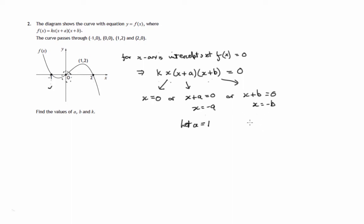And in this case, we'll let b be equal to negative 2, in which case here x would be negative of negative 2, that's 2, and that would give us that one. So there we have the value of a and b.